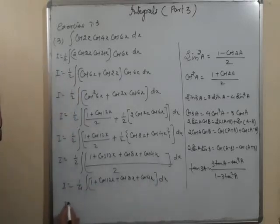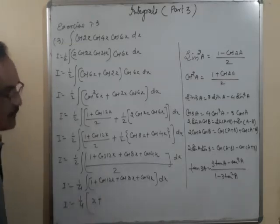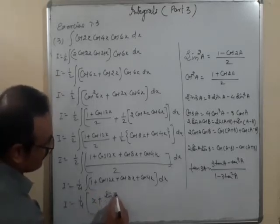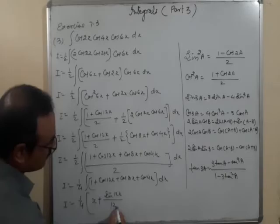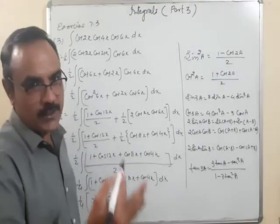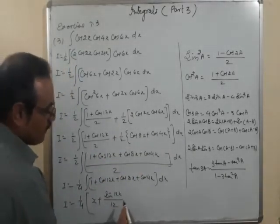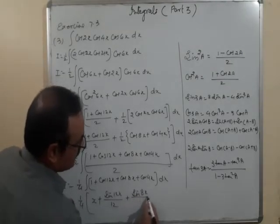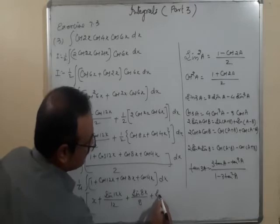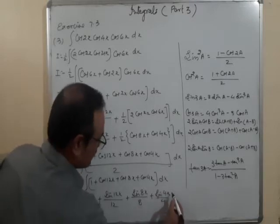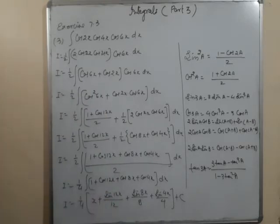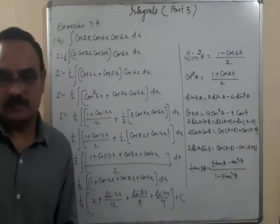Integrating: I = (1/4)[x + sin12x/12 + sin8x/8 + sin4x/4] + C. Here for each cosine term, let the argument equal T so dx = dT/(coefficient). This is the integration of that expression. Whenever we see a square or cube term, we first remove it using these properties.